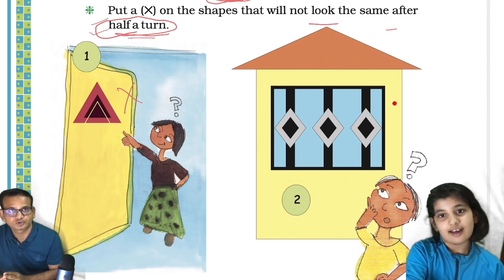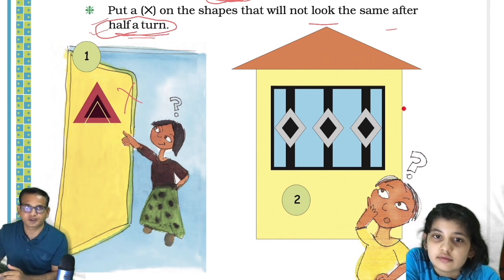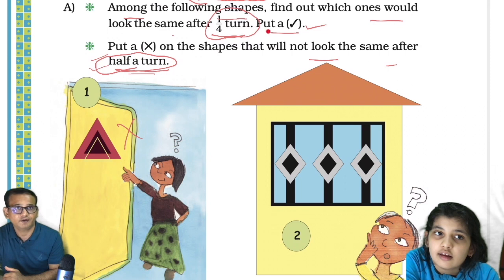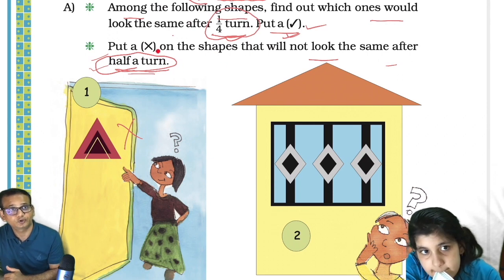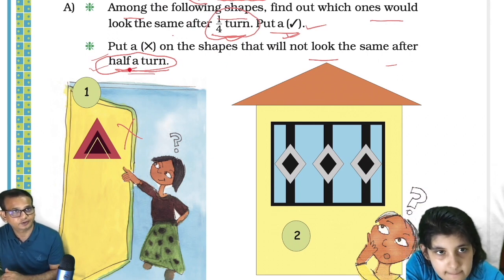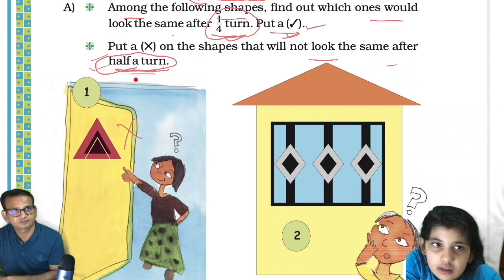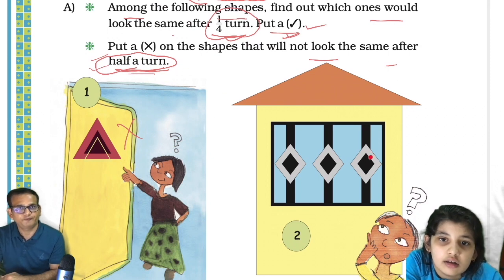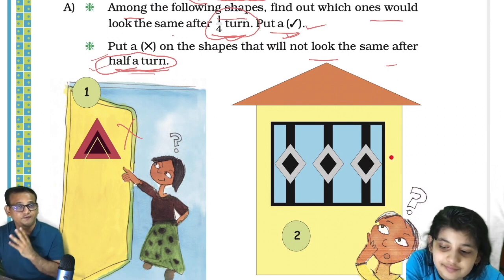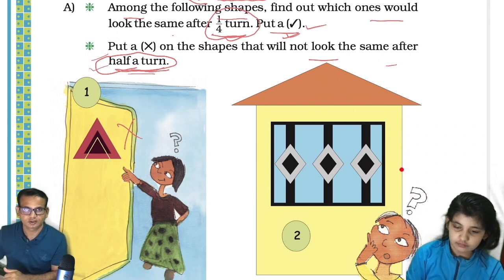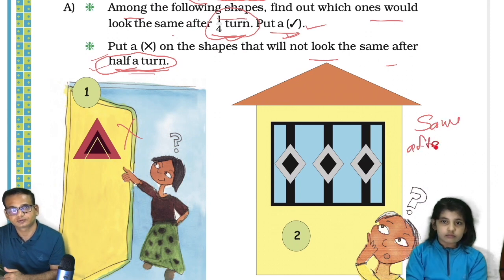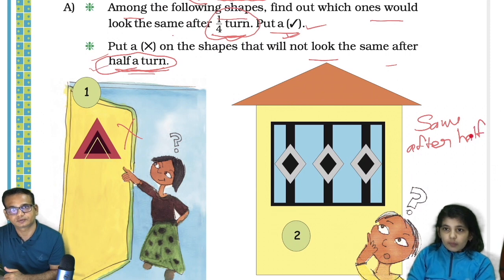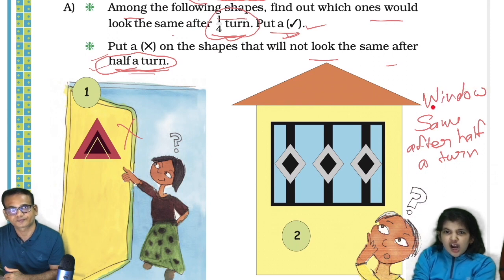So for the window we don't have to do anything. We tick when it is same after quarter turn, and we cross when it is not same after half a turn. The window is the same after half a turn, so no cross needed. That's about the window only — not the house.